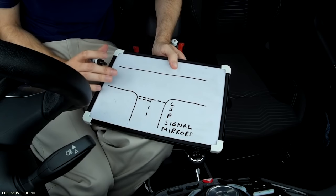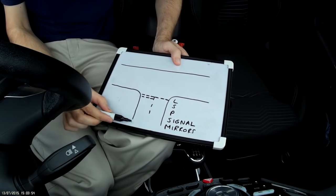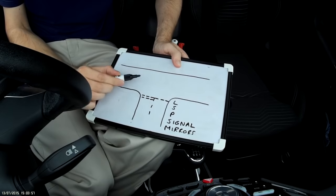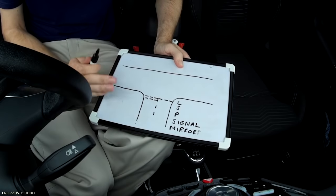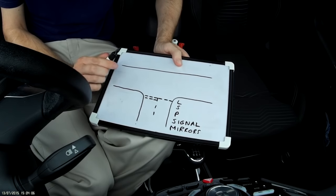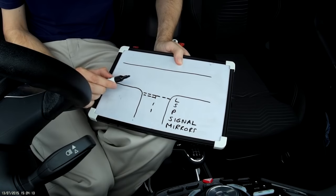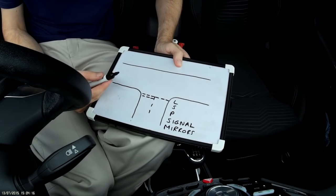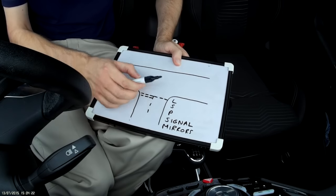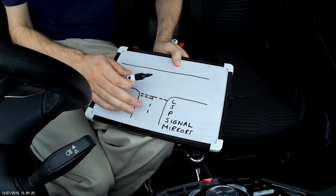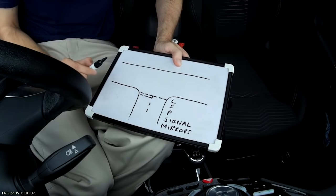The next letter is S — signal. I may be doing a separate video on MSPSL because it's such an important thing. It's amazing how few pupils ever get taught it. After mirrors, you signal left. The timing of the signal can change depending on what's going on around you — for example, you may have a side road you need to pass before you indicate, or you may be about to pass a parked car and don't want to signal left while moving out. The signal is the one part of MSPSL you can adjust.